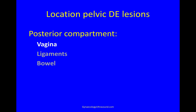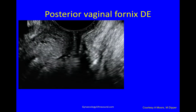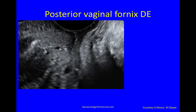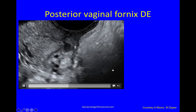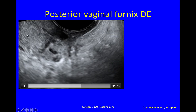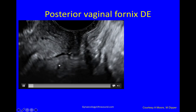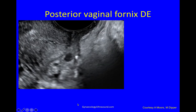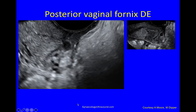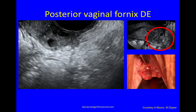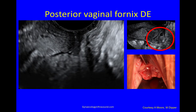Next, you look for nodules of deep endometriosis. I usually start in the posterior compartment, and I break it up into small sections. Here I'm putting the probe in gently, pushing the cervix away, and here is a nodule of deep endometriosis in the posterior vaginal fornix — and that looks like that on speculum examination.